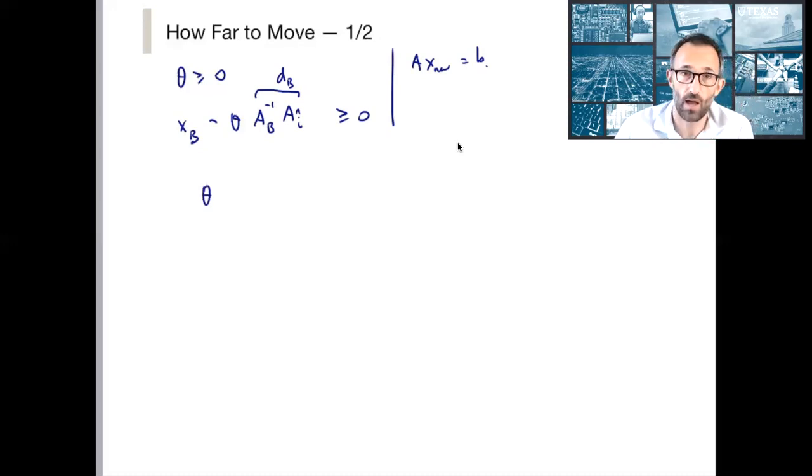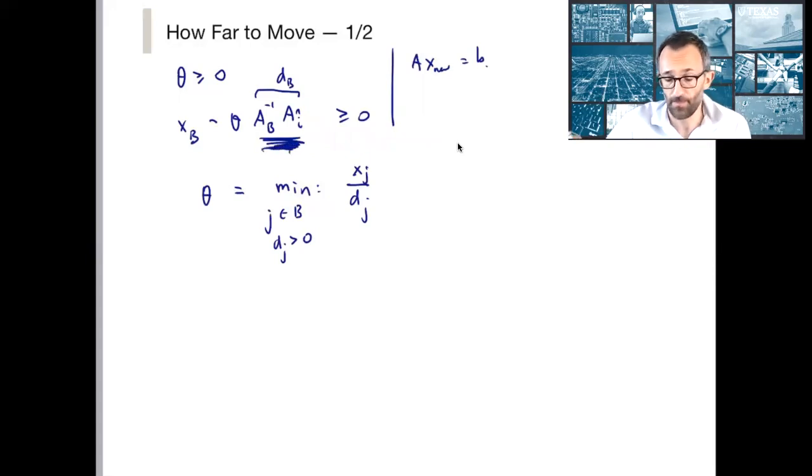And so we can just, we just compare element wise and we find that theta is the smallest value of the ratio of X J over D J where J is an element of B such that D J is positive. Again, if D J is not positive, you can go as far as you want in that direction. If one of these coefficients is negative, as far as that's concerned, you are just increasing that J-th coefficient of X. So you're going to be non-negative. So you're fine.